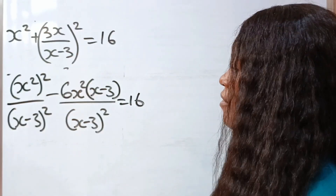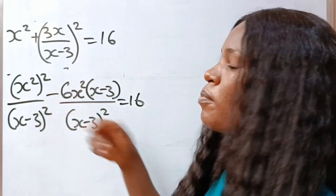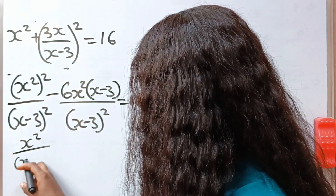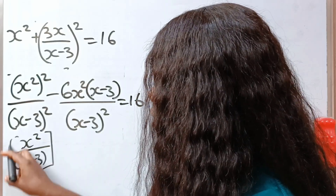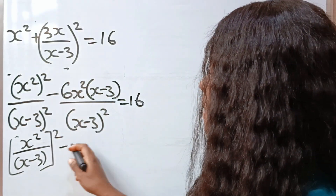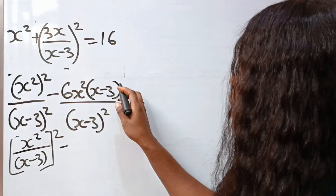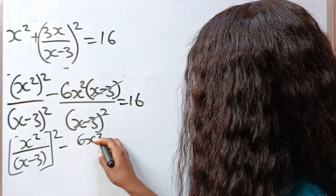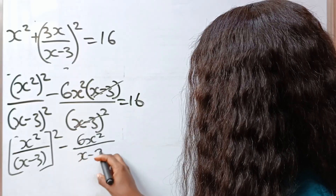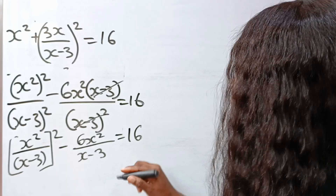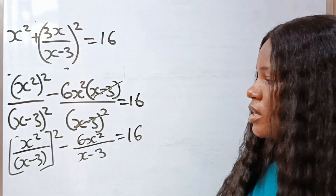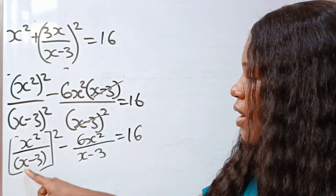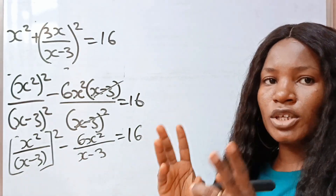Now look at what we have here. You can see that this and this share the same power, so we can bring them together. We have x squared divided by x minus 3, everything raised to the power of 2. Then minus — now x minus 3 can divide this to give 1 remaining — so we are going to have 6x squared divided by x minus 3. Only 1 will remain. Is equal to 16.